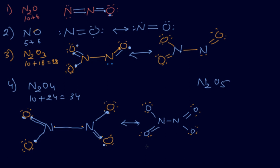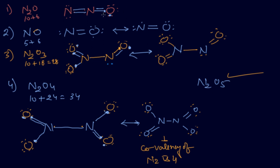You can show the resonance of N2O4 by placing the double bond at different positions. N2O5 you have to draw yourself. Also recall: NO dimerizes to give N2O2 in which the octet of nitrogen is complete. Similarly, N2O dimerizes to give N2O4 as well.